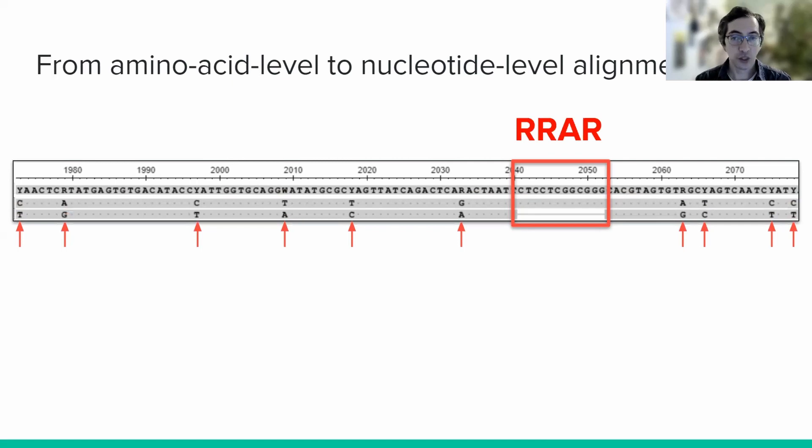if we were to look at the 144 aligned positions flanking either side of the PRRA insert, only partially pictured here, we would see 19 nucleotide mismatches.